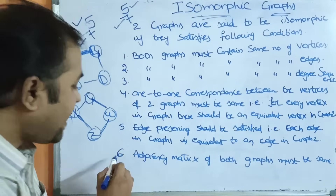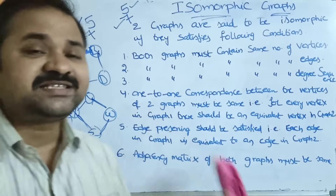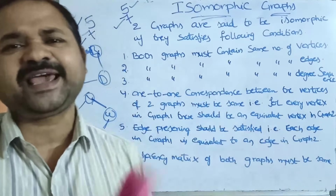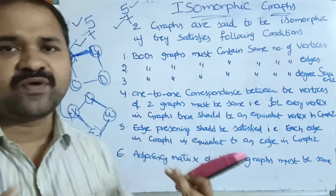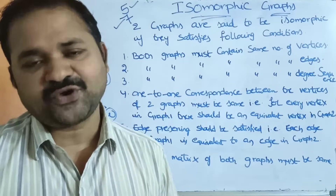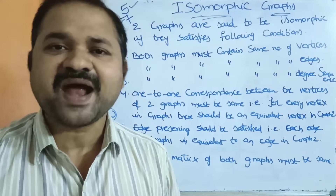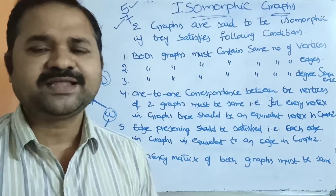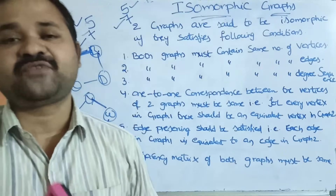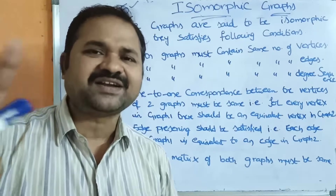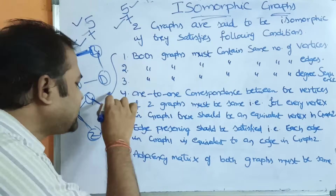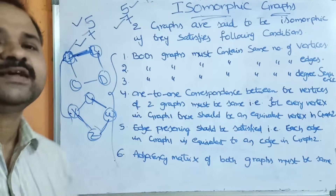The last condition is the adjacency matrix of both the graphs must be the same. Once everything is over, we need to find out the adjacency matrix. If the adjacency matrix of both graphs are the same, then we can say that those two graphs are isomorphic. So two graphs are isomorphic whenever all six conditions are satisfied.